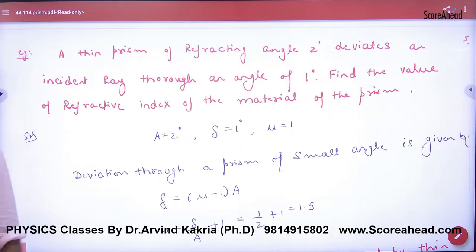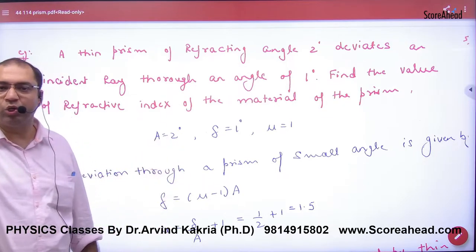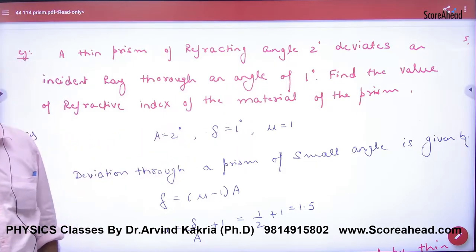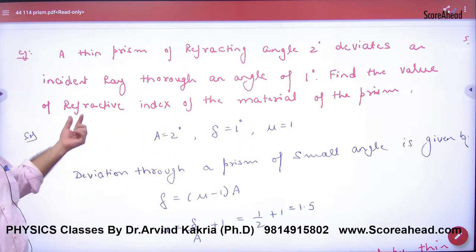Thin prism. Angle is small. Thin prism of refracting angle is only 2 degrees. That means what is refracting angle A? 2 degrees. Deviates through an angle of 1 degree. How much deviation? 1 degree. Find value of refractive index.